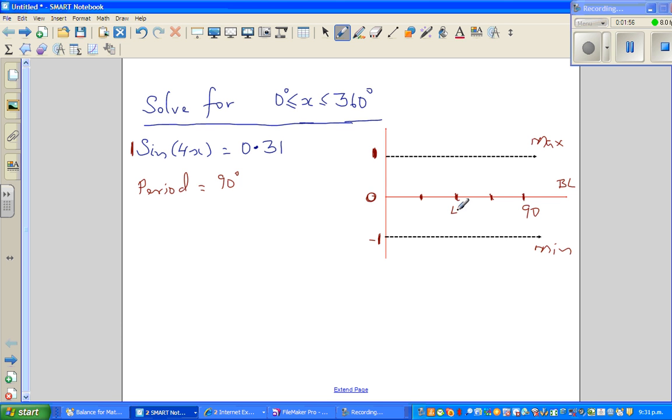So half of 90 is 45, and half of 45 is 22.5. So this is called a step of 22.5. So 22.5, this is 45, this is 67.5.